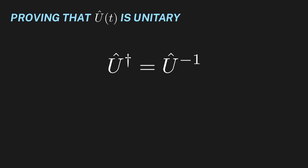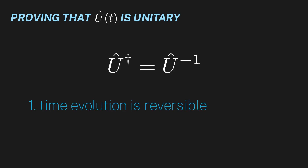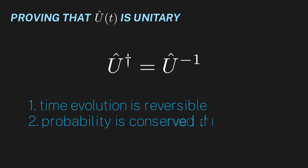Before moving forward, I want to reiterate that proving unitarity relied on only two main physical intuitions: one, time evolution is reversible, and two, probability is conserved throughout time. Remember this, because these two intuitions will allow us to derive 90% of the Schrödinger equation.